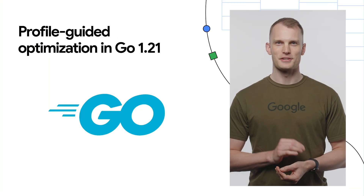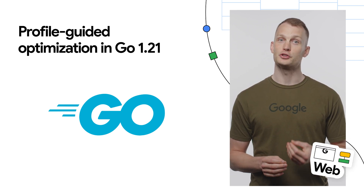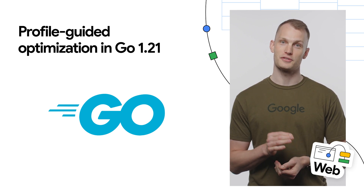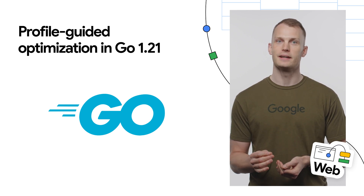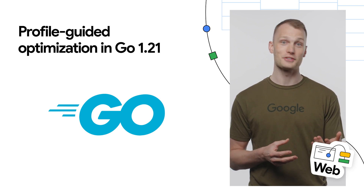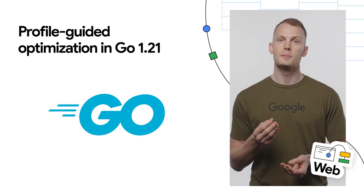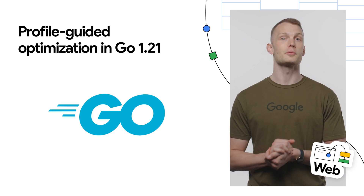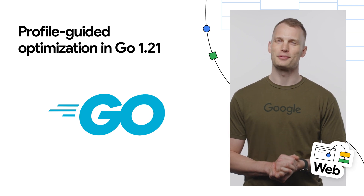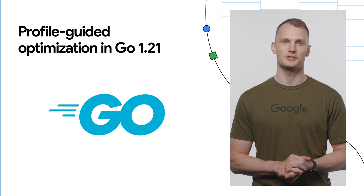Heads up, web developers. Earlier in 2023, Go 1.20 shipped a preview of profile-guided optimization for users to test. After addressing known limitations and with additional refinements thanks to community feedback and contributions, PGO support in Go 1.21 is ready for general production use. See the profile-guided optimization user guide for complete documentation.